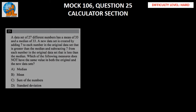A data set of 27 different numbers has a mean of 33 and a median of 33. We have a data set with 27 terms, and let us name those terms as x1, x2 till x27.